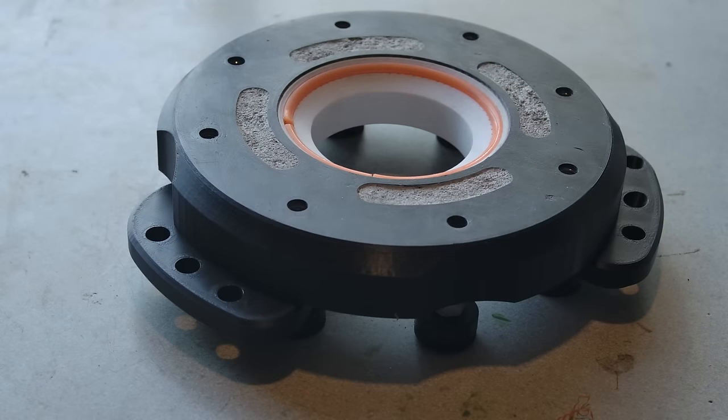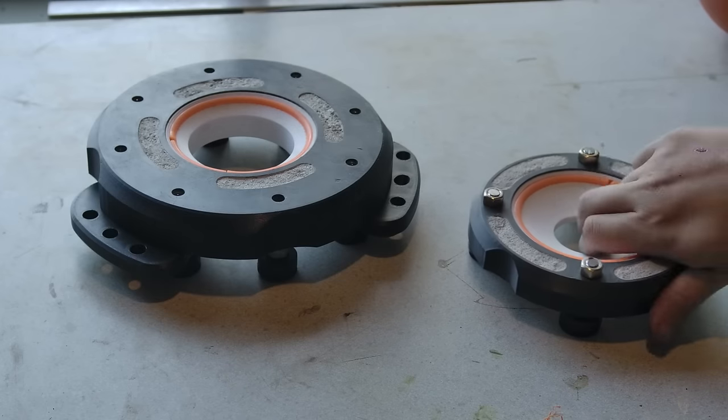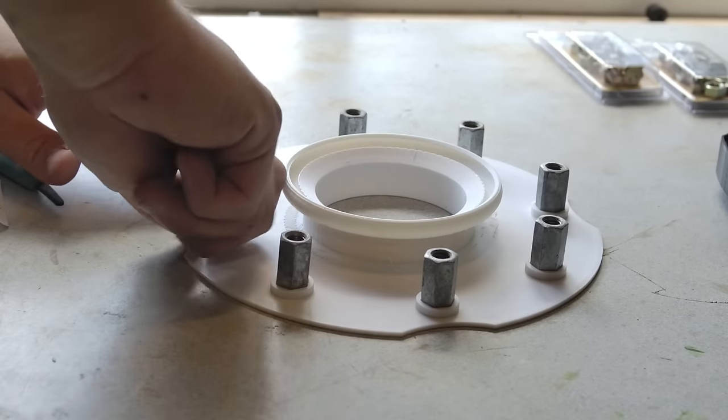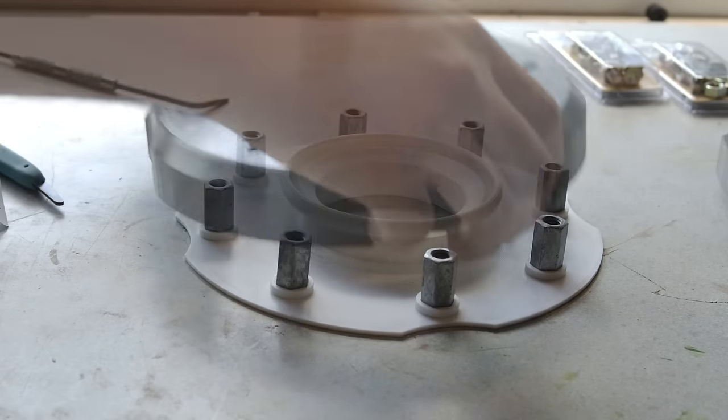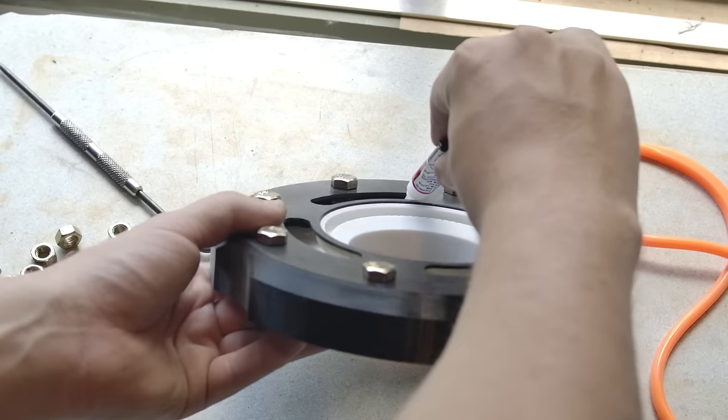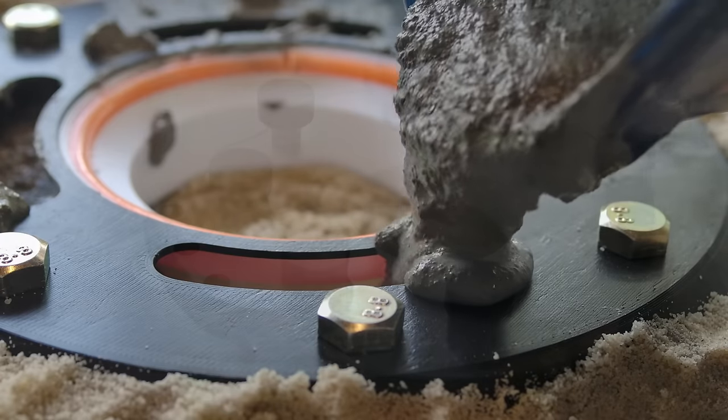The biggest change from version 1 is the new extra large base. This begins with the printed components being bolted together with another 8 coupling nuts, then some glue and concrete, much like the first version.